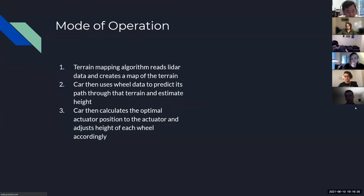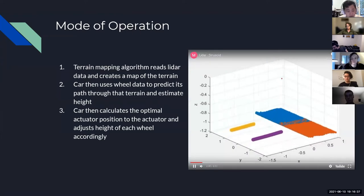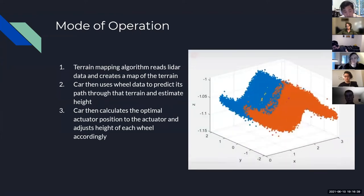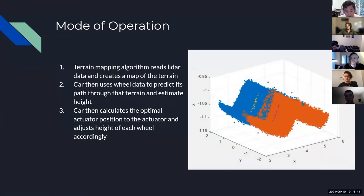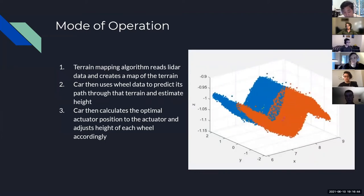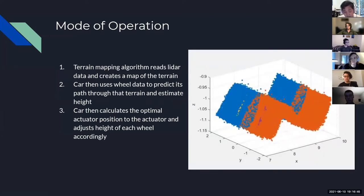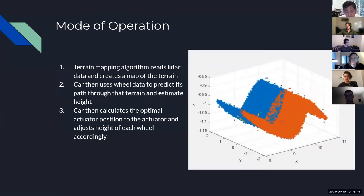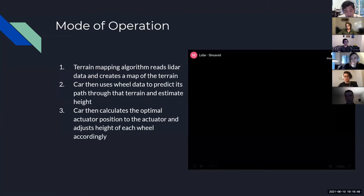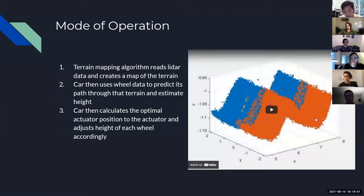In terms of our mode of operation: first, a terrain mapping algorithm reads LiDAR data and creates a map of the terrain. The car then uses wheel data to predict its path through that terrain and estimates its height. Finally, the car calculates the optimal actuator position and adjusts the height of each wheel accordingly. This is basically a loop that repeats over and over again with a control scheme.